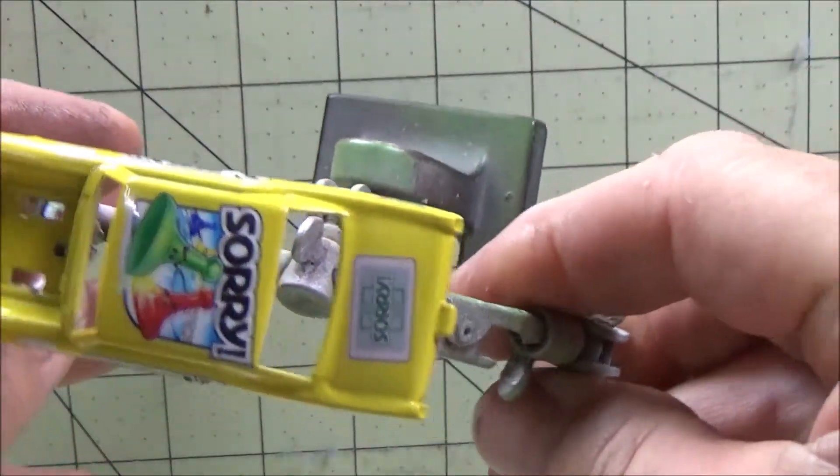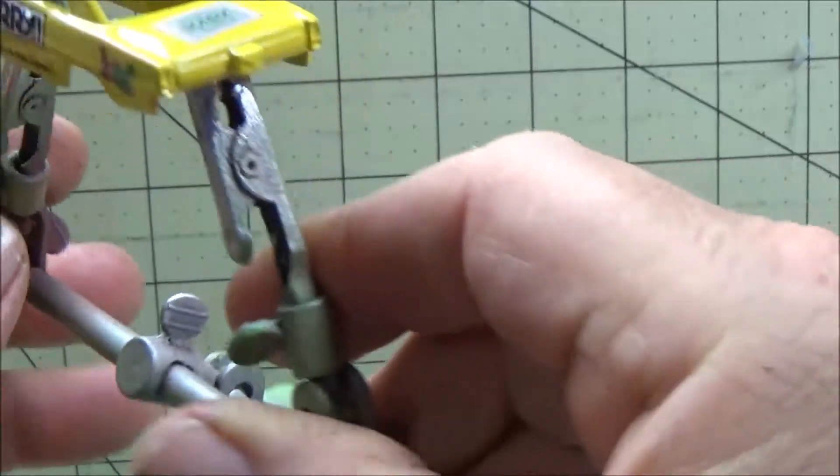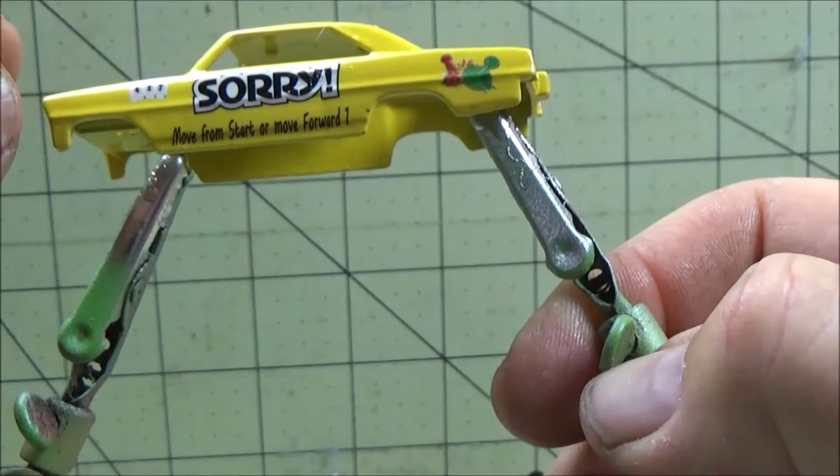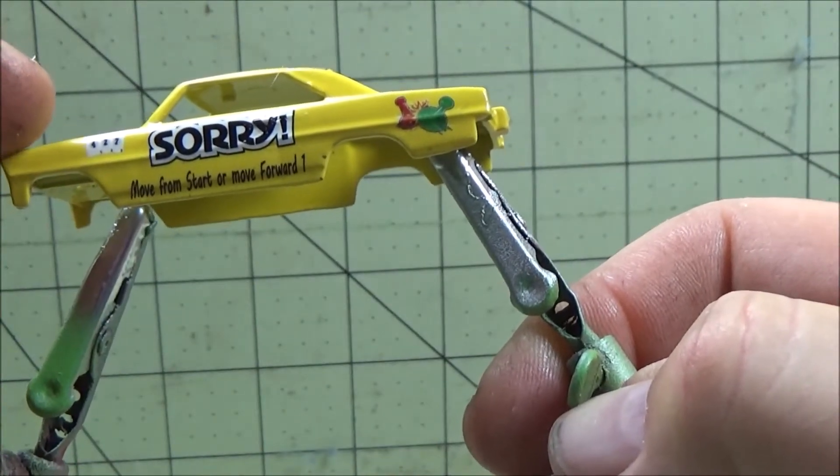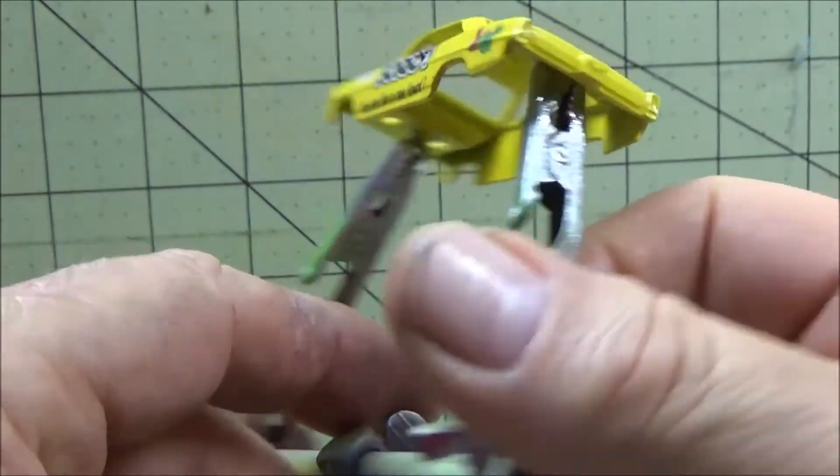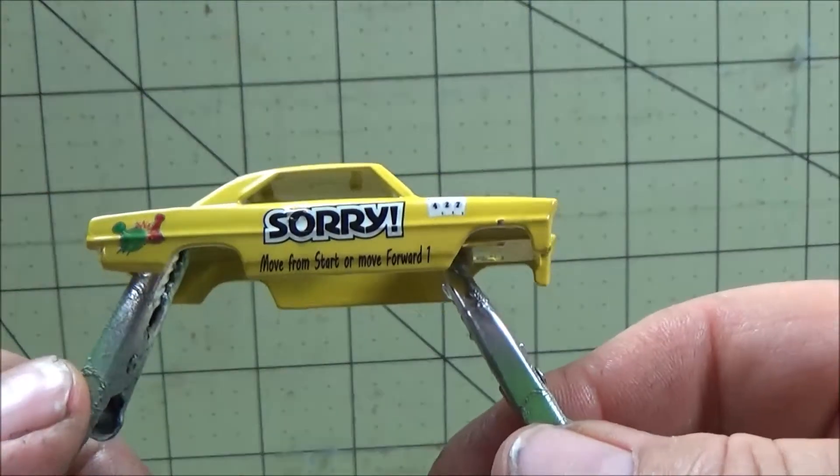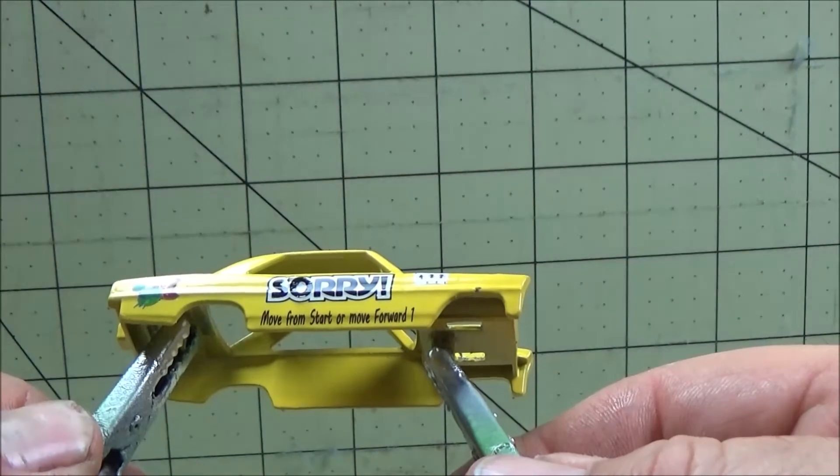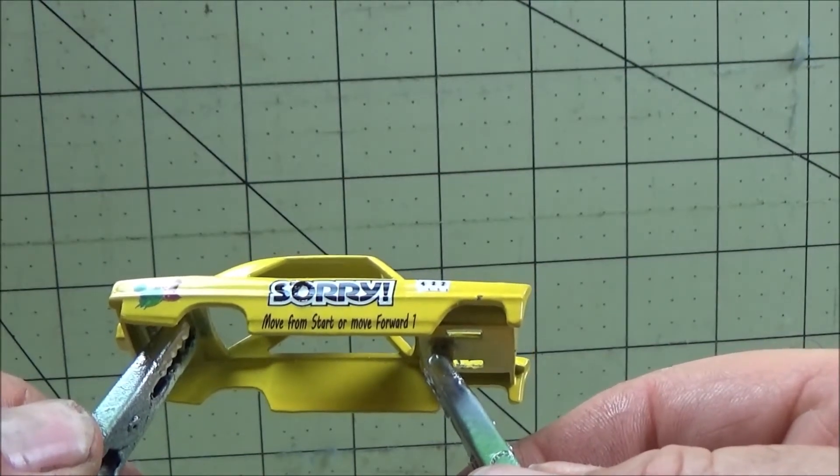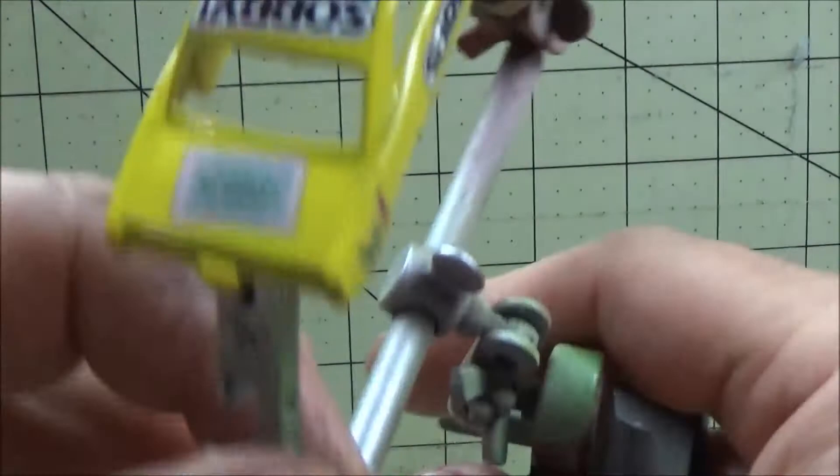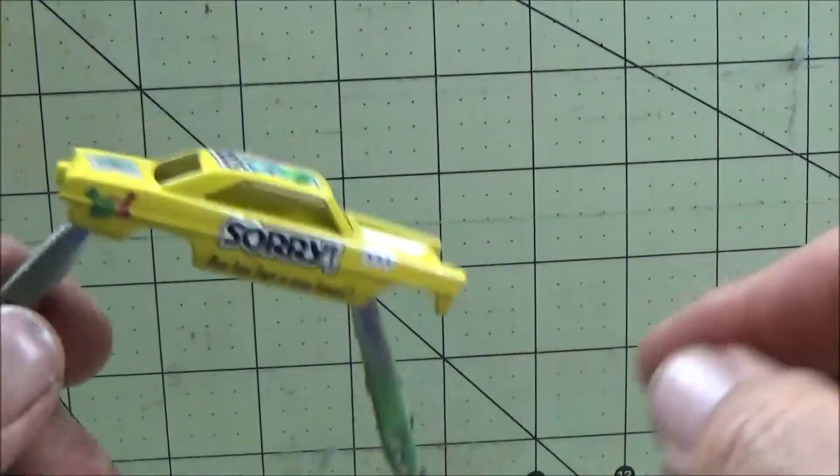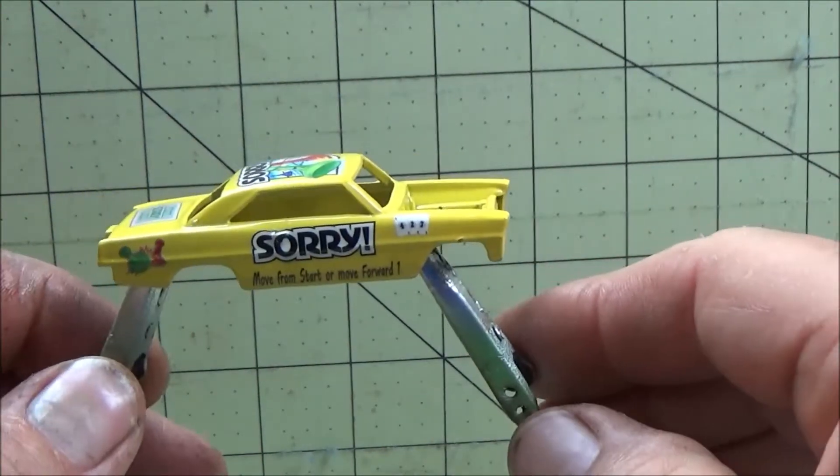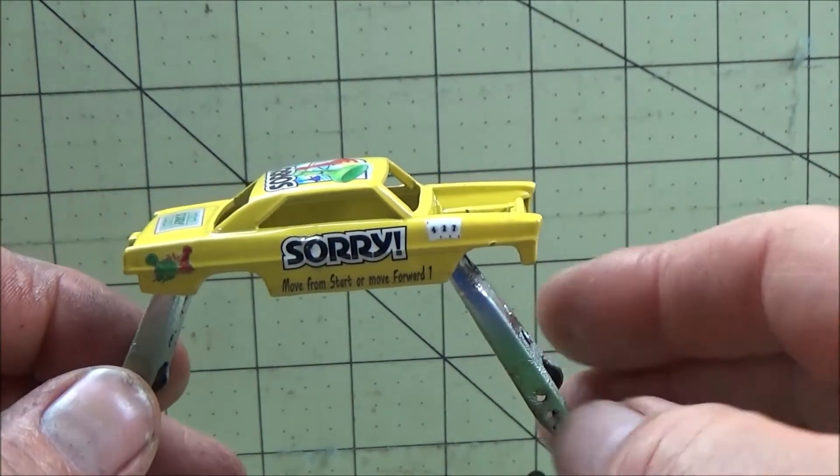There's the decals on the top. I put the sorry card on the back. It has the sorry pieces on the rear of the car. The 427 for the engine. Same on this side. It says move from start or move forward. That means I don't play sorry. Anyway, we're going to put this jewel together and see how she does.